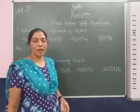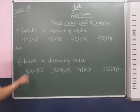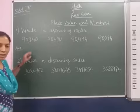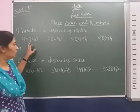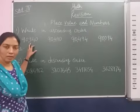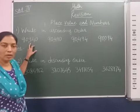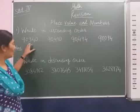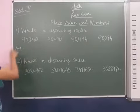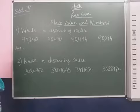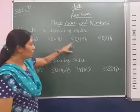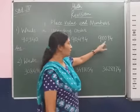Now our next step is to look at the 100s place. We can compare the numbers on that basis. In these numbers, we can see that the 100s place values are: 9, then 4, then 4, then 0.